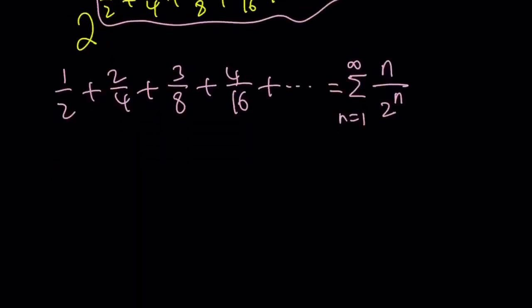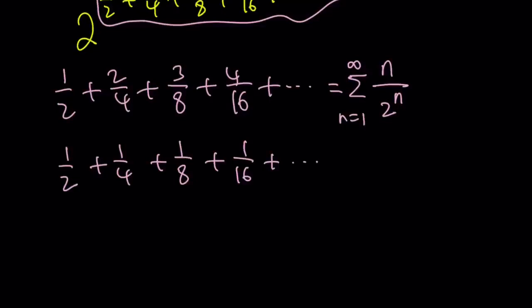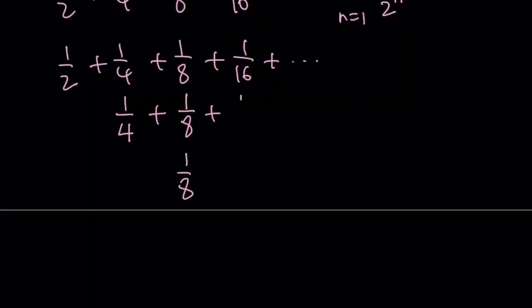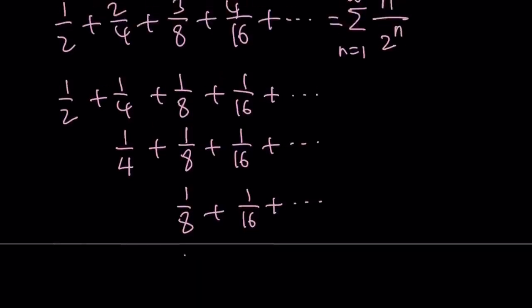We're going to break this down into different pieces. If you start with 1 half and continue with 1 fourth, 1 eighth, 1 sixteenth, this would be geometric and we have an answer for that. But then we have 2 fourths, so that requires adding another fourth. And we have 3 eighths, meaning we add the eighth three times. So we can line these up and shift it over — followed by 1 sixteenth, 1 eighth plus 1 sixteenth, and so on — adding more terms each time. Let's look at each of these values that it converges to and then add them.